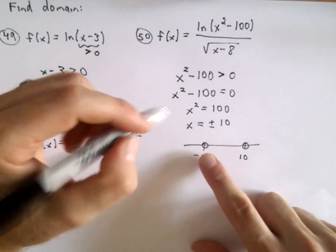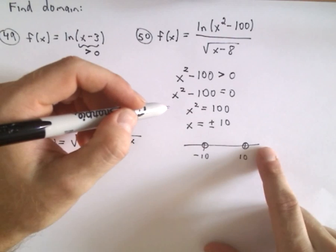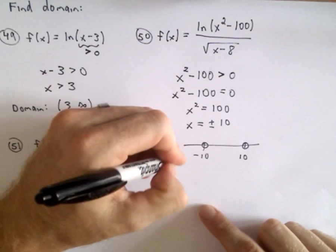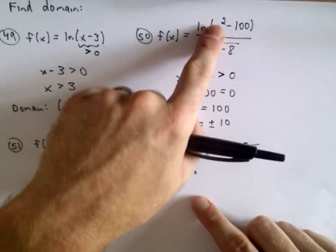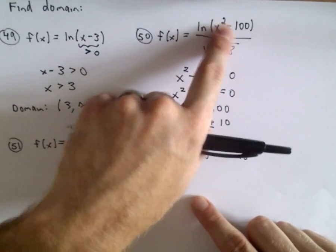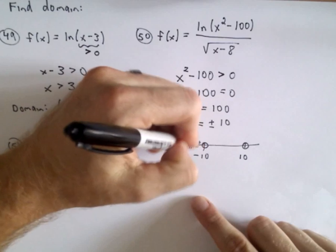And I'm going to go a little bit faster. Now we have to take a test point from each interval. Say if I use x equals negative 100. Well, negative 100 squared minus 100, that's going to be a positive number. So those values will work.